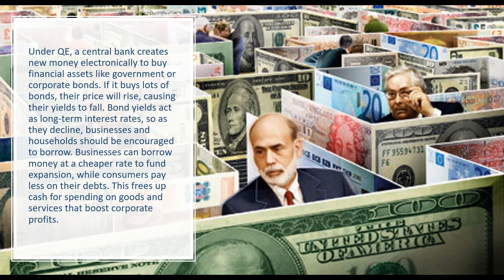Under QE, a central bank creates new money electronically to buy financial assets like government or corporate bonds. The US did it quickly. The Eurozone and the Bank of Japan are still buying debt and continuing their quantitative easing. The ECB continues to buy because their program announced a year and a half ago doesn't end till December, so they're still buying whatever that allotment was per month — and it's a lot.